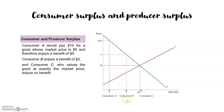Here we have Consumer B, whose reservation price is 7. So if my reservation price is 7 and the market price is 5, my surplus is 7 minus 5, equal to 2.